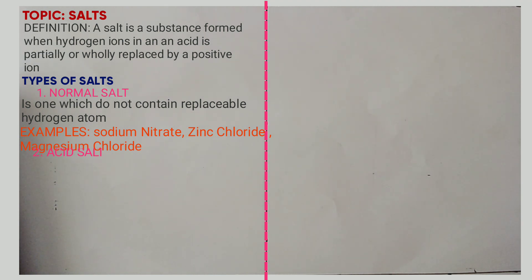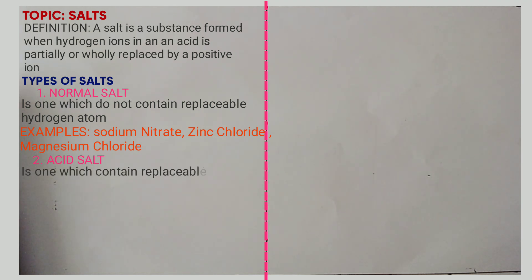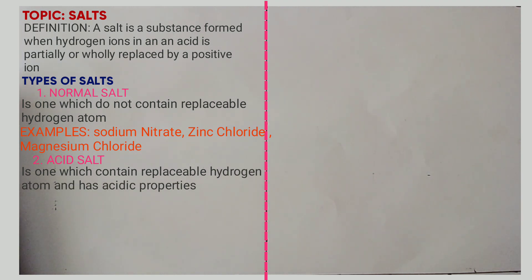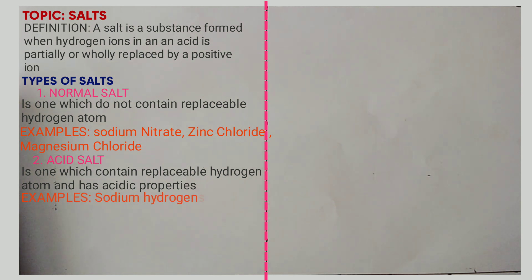An acid salt is one which contains a replaceable hydrogen atom. These salts have acidic properties. Examples include sodium hydrogen sulfate, potassium hydrogen carbonate, etc.